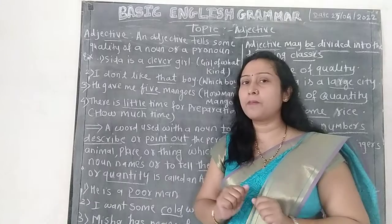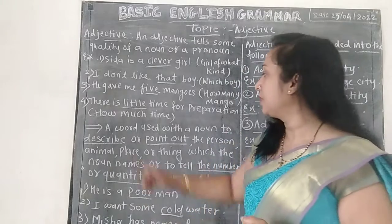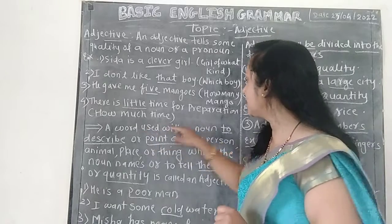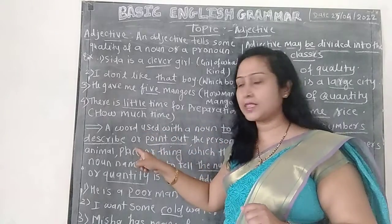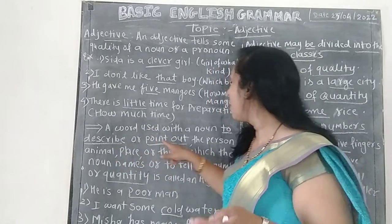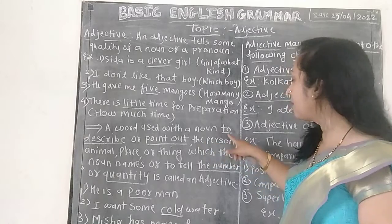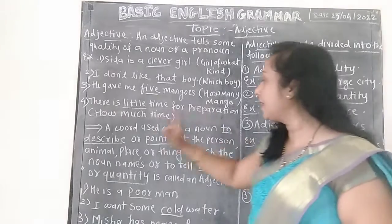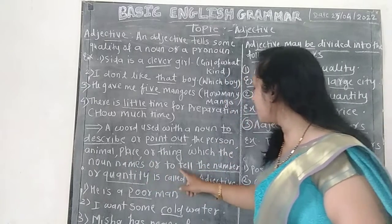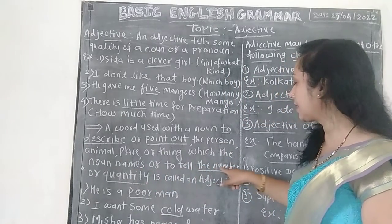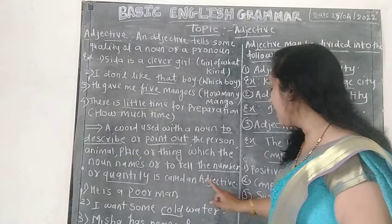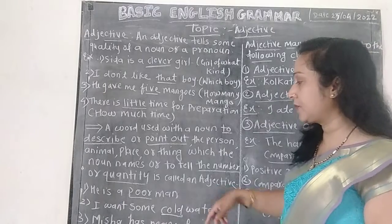What is the exact definition of adjective? A word used with a noun to describe or point out the person, animal, place, or thing which the noun names, or to tell the number or quantity, is called an adjective.